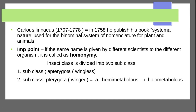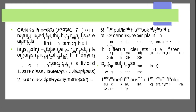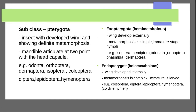Pterygota is further divided into two divisions: Hemimetabola and Holometabola. Insects with developed wings showing definite metamorphosis are related to Hemimetabola and Holometabola classification.